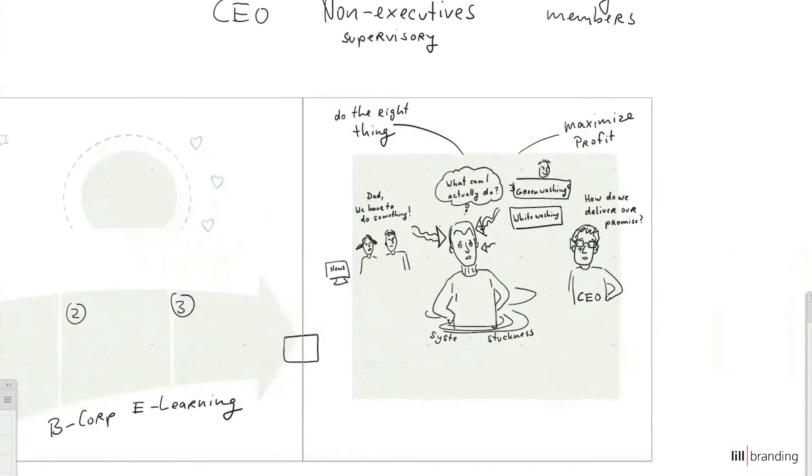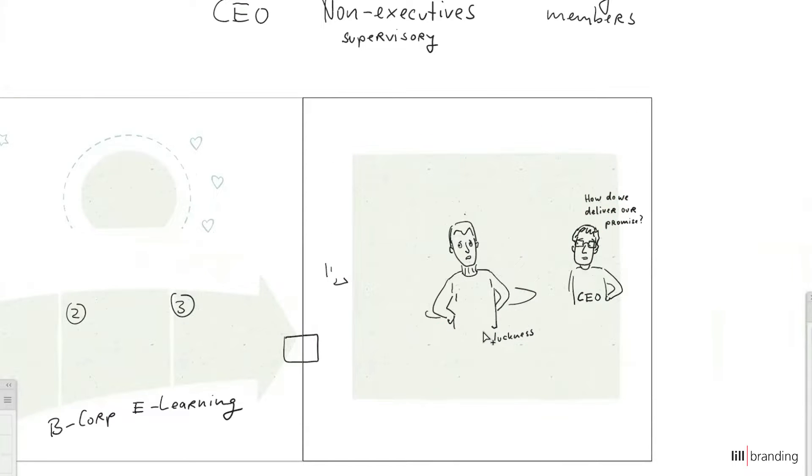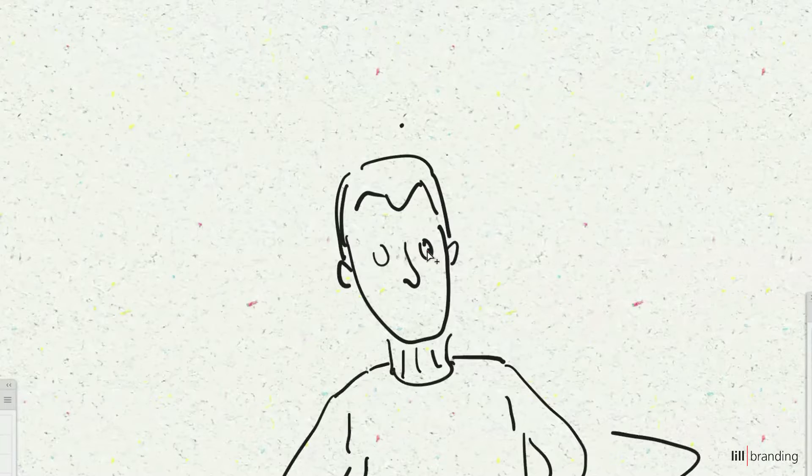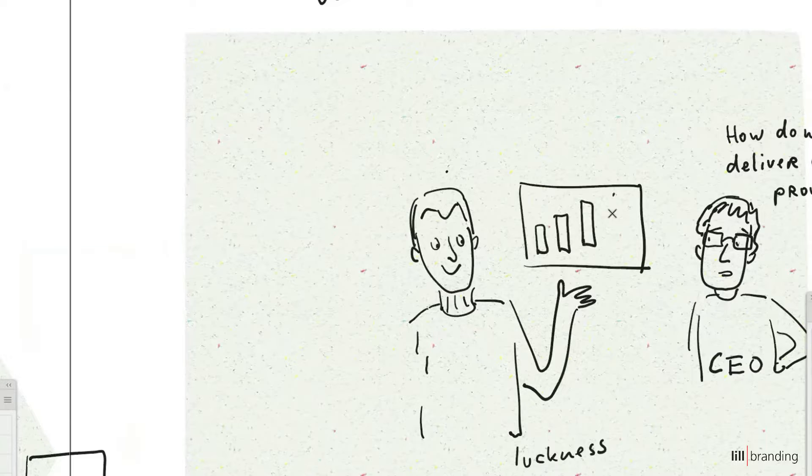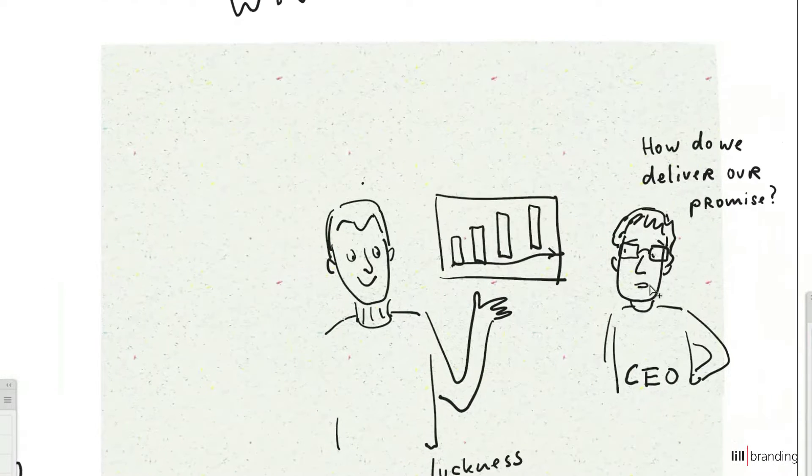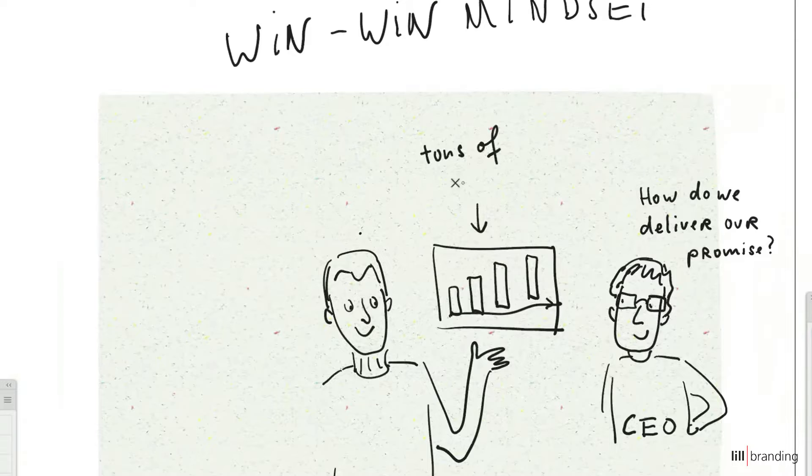What is he dreaming about? What is the situation that he would love to achieve? I don't know what he thinks, but what I always like challenging them on is that when you get stuck, it's because you're in a sort of Cartesian mindset where you're thinking in a linear way, in a win-lose way. And I think what's beautiful about the B-Corp idea...